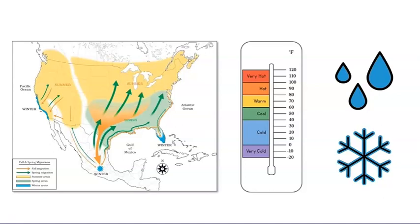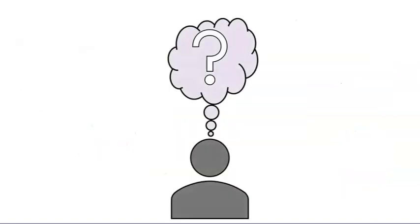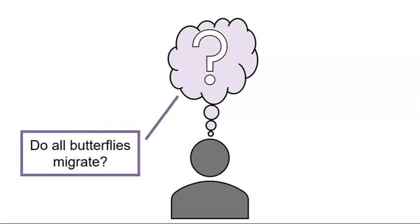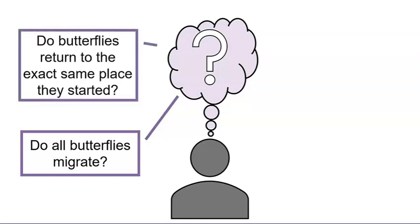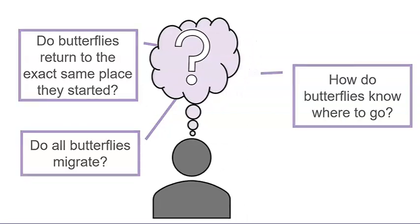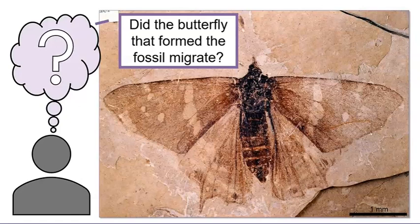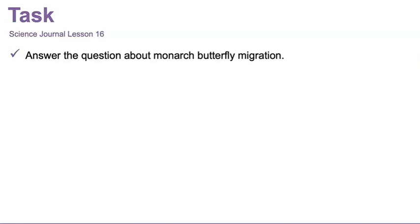Your task for today will be to answer the question: why do the seasons cause monarch butterflies to migrate? What new questions do you have about butterfly migration? I wonder, do all butterflies migrate? And do butterflies return to the exact same place they started? I wonder how butterflies know where to go. I also wonder, did the butterfly that formed this fossil migrate? We'll work on answering these questions next time. Let's review your task for today: answer the question about monarch butterfly migration.